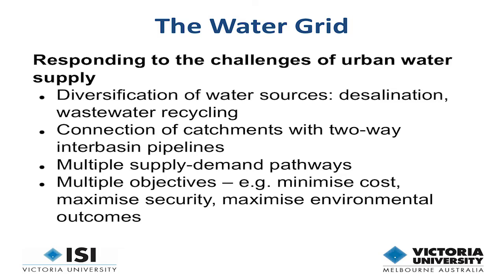So, what are water grids? They're basically water networks, and where they differ from traditional water networks is they have more advanced water supply sources — things like desalination and wastewater recycling. This gives different characteristics compared to the traditional network operating off surface waters or groundwaters. They also have two-way connections, so pipelines that can pump either way, and certainly multiple supply-demand pathways. Desalination and wastewater recycling tend to be more expensive but more reliable forms of water.